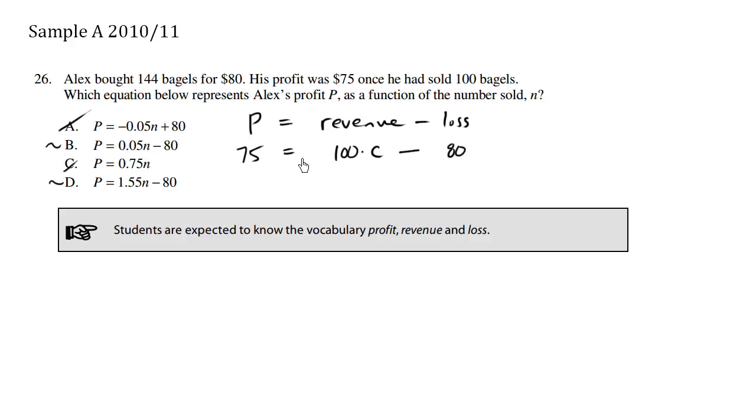We have 75 equals 100C minus 80. So using some basic algebra, 100C is equal to 75 plus 80, which is 155. And we divide both sides by 100. We get C is equal to 1.55.